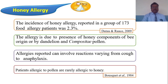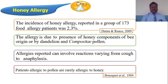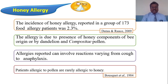One important point: though honey is very useful, it can also cause allergy in some human beings. Honey allergy was reported in a group of 173 food allergy patients at only 2.3%. This allergy is due to the presence of honey components of bee origin or from dandelion and composite pollens, which are responsible for the allergic activity. Allergic reactions can range from mild urticaria to anaphylaxis, especially in patients sensitive to pollen grains in honey.